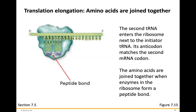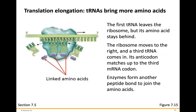The second transfer RNA enters the ribosome next to the initial transfer RNA. Its anticodon matches the next messenger RNA codon. If the next codon is GGA, the transfer RNA anticodon is CCU, carrying the amino acid glycine. Methionine and glycine, brought together close to each other on the ribosome, form a peptide bond. The enzymes in the ribosome join the amino acids together. The first transfer RNA then leaves the ribosome, but its amino acid stays behind, now bonded to glycine.